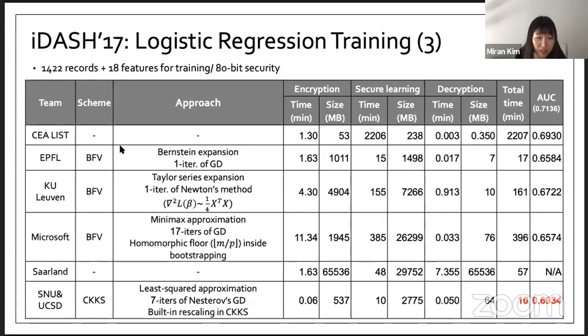EPFL and KU Leuven used BFV scheme. BFV scheme just supports integer encoding or integer encryption. They first scale real numbers to integers. After some computation, the message can be very large, so they should set a large plaintext space, and it results in some downgrade in performance.